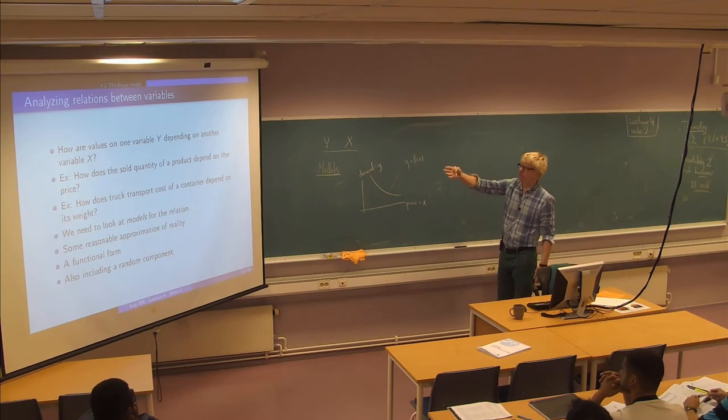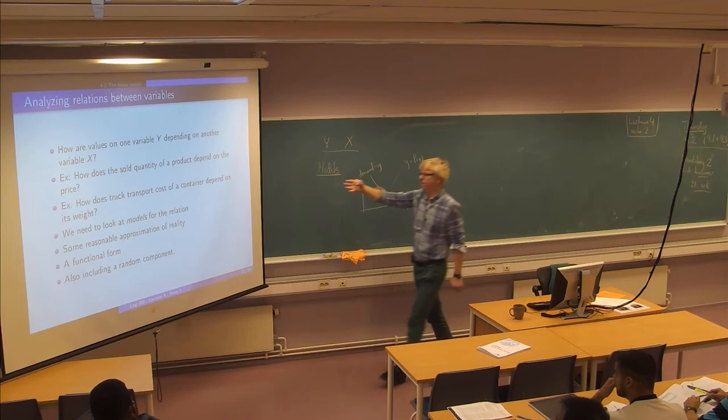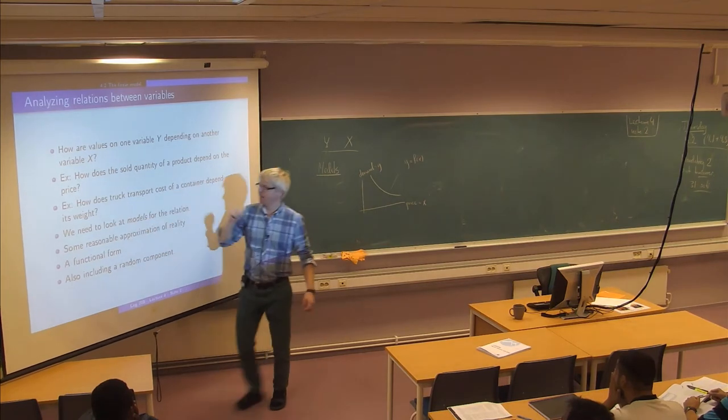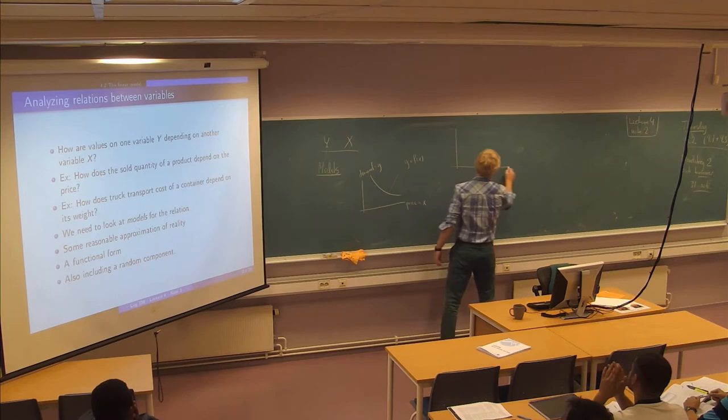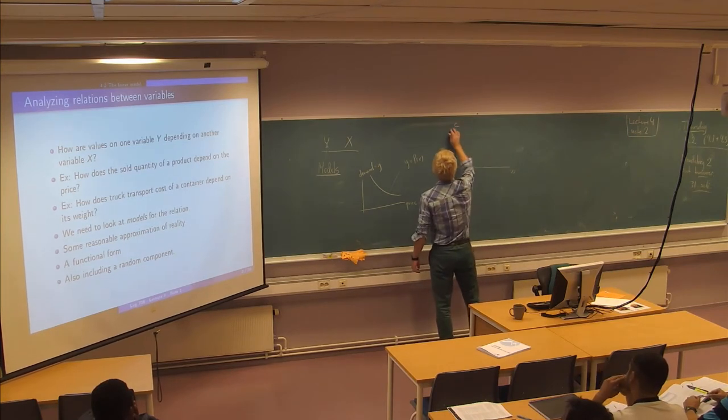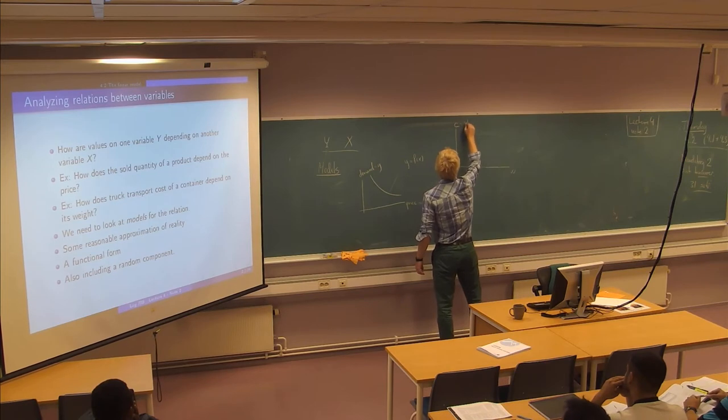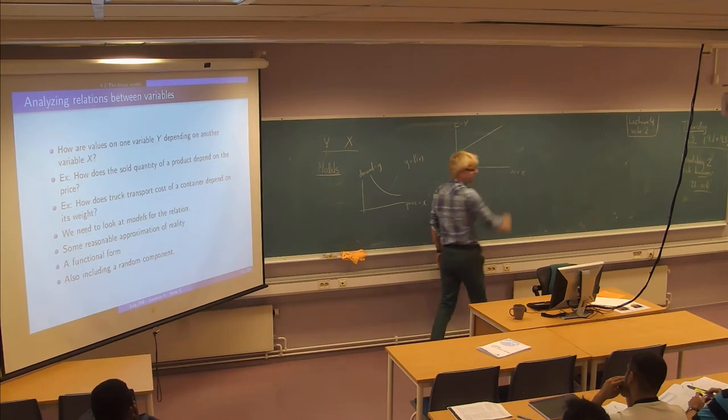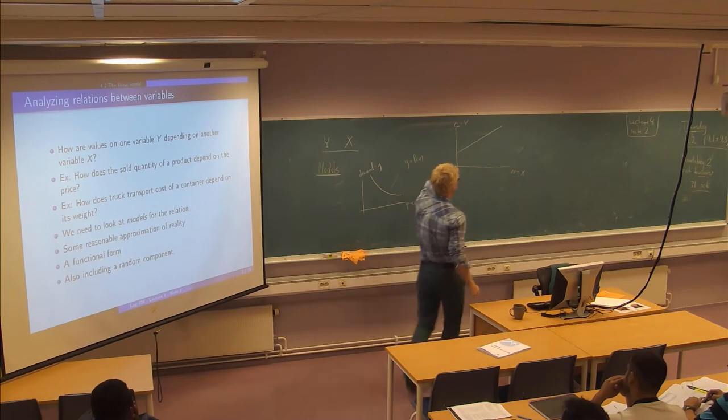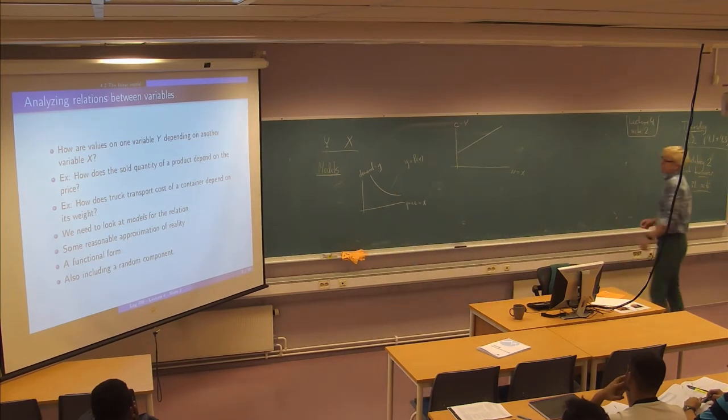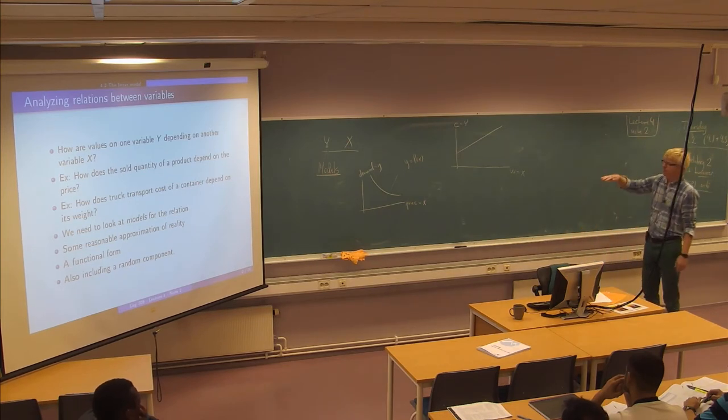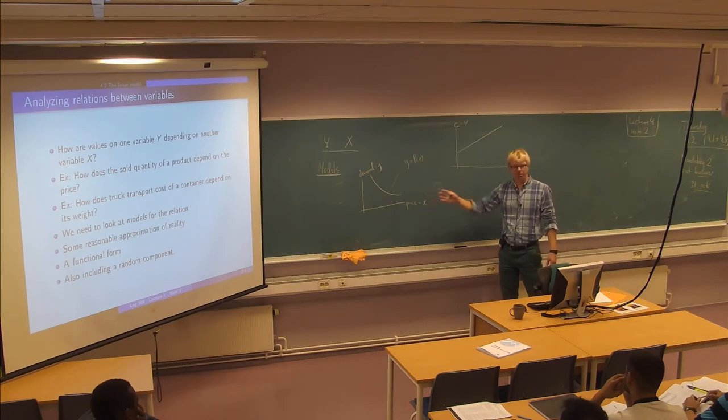And in the other example maybe we would clearly expect that the transportation cost would be increasing with higher weight on the container. So you would expect some weight and cost here, maybe something like this. I don't know exactly that it need to be linear but let's just assume. And these are the sort of basic economics textbook relationship between price and demand for instance.